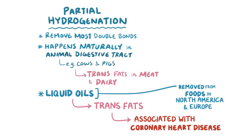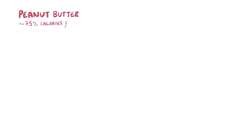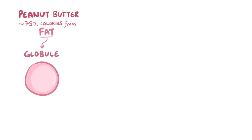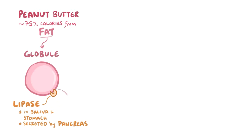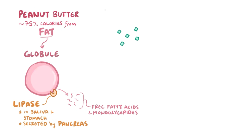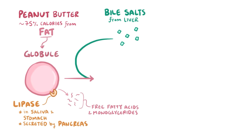Although some foods might have more of one type of fat than another, all foods are made up of a blend of fatty acids. When you eat a food like peanut butter, which has about 75% of its calories from fat, the body goes through a set of steps to digest and absorb the fatty acids. Triglycerides are hydrophobic, so they form large globules of fat. Enzymes called lipases in the saliva, stomach, and secreted by the pancreas can break down triglycerides into free fatty acids and monoglycerides. Bile salts produced by the liver break the large fat droplet into smaller droplets, which increases the surface area for the lipases to work.